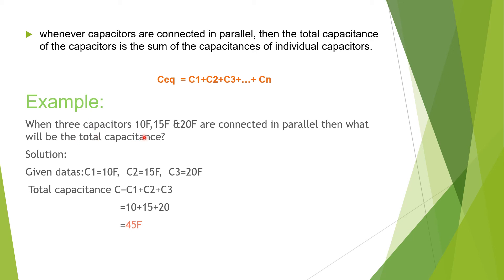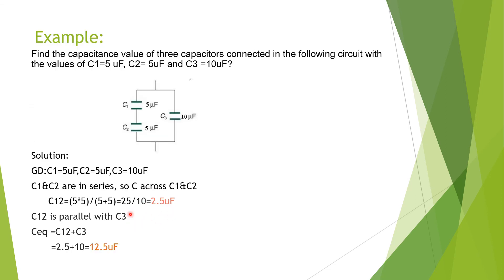Here is an example: when three capacitors of 10 farad, 15 farad, and 20 farad are connected in parallel, what is the total capacitance? Since they are in parallel, the total capacitance is C1 + C2 + C3 = 10 + 15 + 20 = 45 farad.